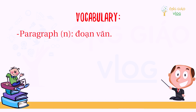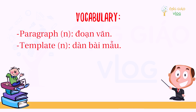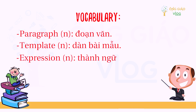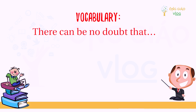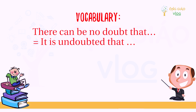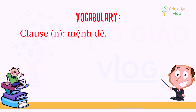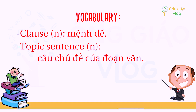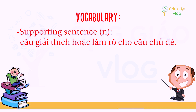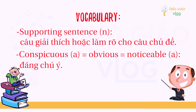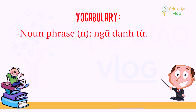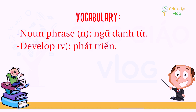Vocabulary: 'paragraph' — đoạn văn; 'template' — dàn bài mẫu; 'expression' — thành ngữ; 'there can be no doubt that' / 'it is undoubted that' / 'undoubtedly' — không còn nghi ngờ gì nữa rằng / chắc chắn rằng; 'clause' — mệnh đề; 'topic sentence' — câu chủ đề; 'supporting sentence' — câu giải thích hoặc làm rõ cho câu chủ đề; 'conspicuous' — đáng chú ý (obvious, noticeable); 'noun phrase' — ngữ danh từ; 'develop' — phát triển; 'benefit/advantage' — lợi ích.